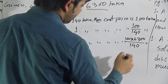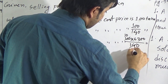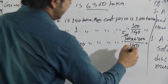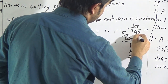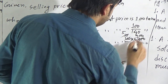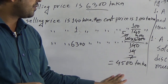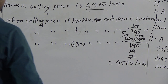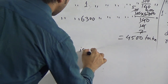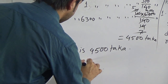Now we calculate: divide 100 and 6300 by 10 — this gives 10 and 630. Divide 10 by 2 to get 5, and divide 630 by... wait — divide 14 by 2 to get 7, then divide 630 by 7 to get 90. So the result is 5 times 900 = 4500 taka. Our cost price is 4500 taka. Therefore, the cost price is 4500 taka.